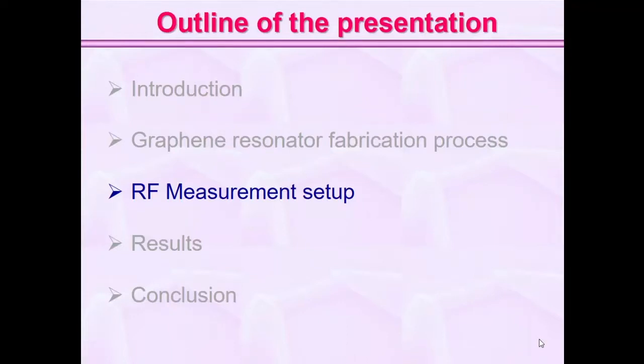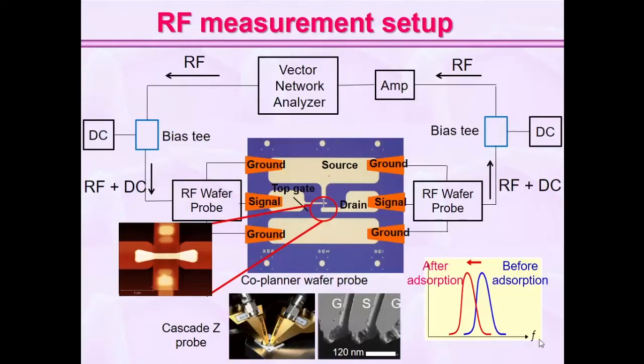Now I move on to the measurement setup. We used coplanar waveguides because, to have better responsivity at high frequency, we need a better signal-to-ground condition up to the device level. For that purpose, we fabricated coplanar waveguides. In this layout, there is the top gate, the drain terminal, and the source terminal. We used coplanar waveguide probes in a ground-signal-ground configuration, connected inside the vacuum probe.